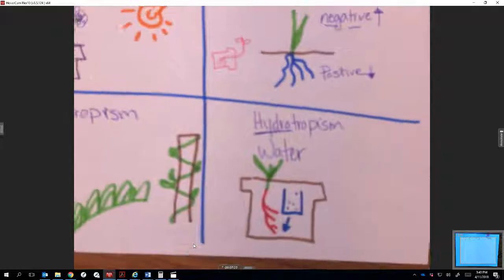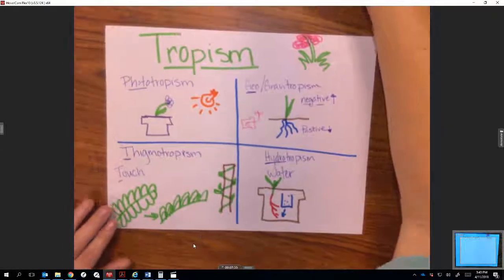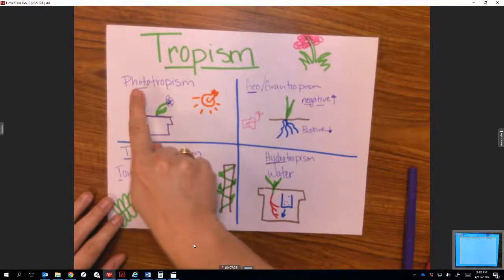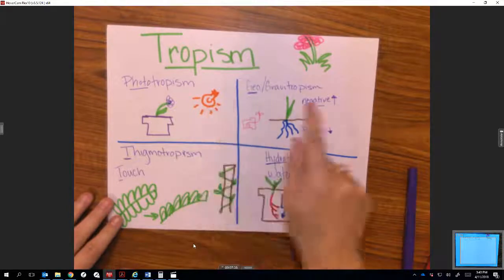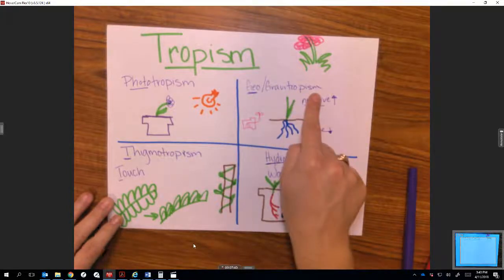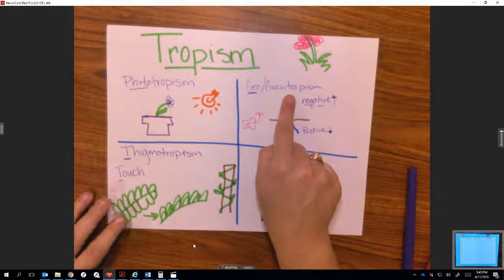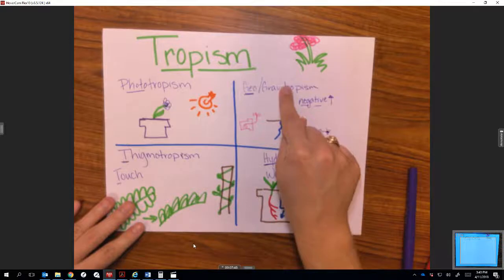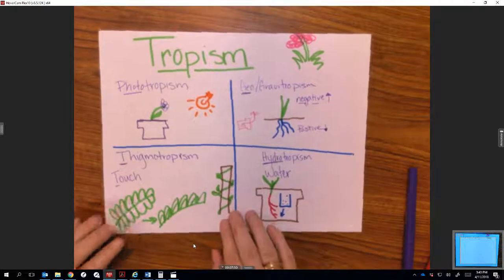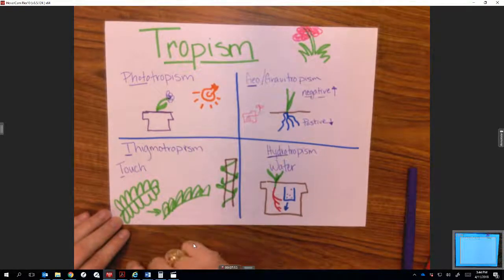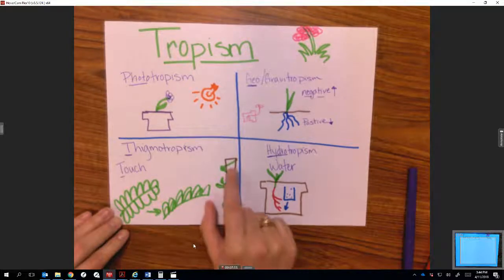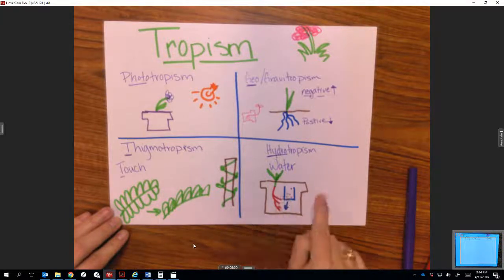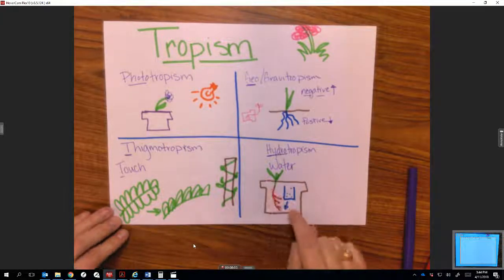This is tropisms, which is a plant response to external stimulus. Photo, meaning light, plants response to light. Geotropism, meaning gravity. Earth has gravity. It's a plant's response to gravity. The roots grow down, that's positive. The stem grows away from gravity, that's negative. Thigmotropism is touch. You can have like a vine growing up something because it touches it or the plant that closes when you touch it. We also discussed hydrotropism, which is a plant's response to water.